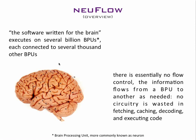What's happening in the brain? Most of the brain's area is devoted to vision. If we were to write software for it, it executes on a lot of brain processing units — which we call neurons — and each one of them is connected to several thousand other neurons. In the brain there's no flow control: there's no running a fixed program. Information flows from one neuron to another as needed, and you don't waste circuitry fetching, decoding, caching, and executing code, as is done in most common hardware.